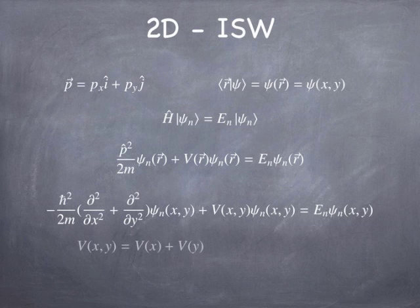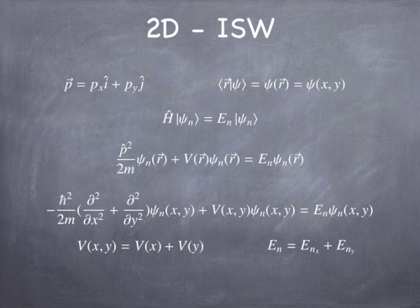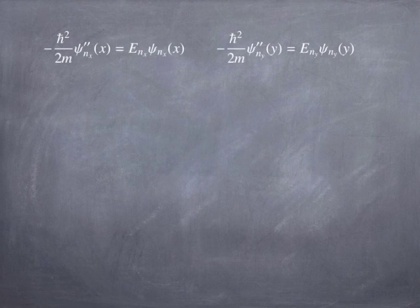If I think of the potential as being made up of an x part and a y part in sum, and the energy as being made up of an x part and a y part, then I can separate this one Schrödinger equation into two Cartesian components. I can write out the x, y dependence as an x part times a y part. This works as long as the potential can be expressed as a sum of an x part and a y part.